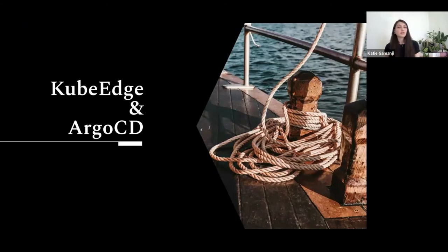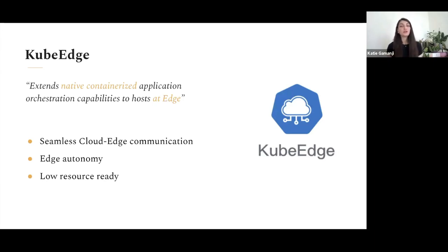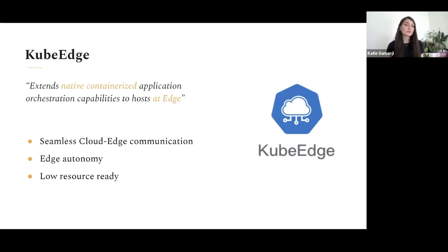The second use case I want to showcase is how we can propagate applications towards the edge using KubeEdge and Argo CD. KubeEdge is built on top of Kubernetes and provides synchronization for metadata, application, and networking between the cloud and the edge, enabling seamless communication between the two. When you deploy your application, you just interact with the cloud side and it propagates towards the edge transparently. KubeEdge also provides edge autonomy — if the cloud is down or the connection is lost, the application on the edge remains up and running independently. KubeEdge is also built to run on low resources such as limited CPU, memory, and bandwidth.